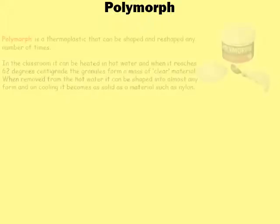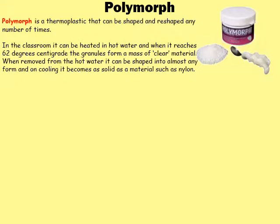The last material I'd like to talk about is polymorph. Polymorph is a thermoplastic, which means it can be shaped and reshaped any number of times. In the classroom we heat it in hot water, and when the water reaches a certain temperature the granules — which is what it's supplied in — turn into a mass of clear material. When you remove it from the hot water, you can shape and mould it a bit like putty, and when it cools down it becomes solid, really solid like nylon.